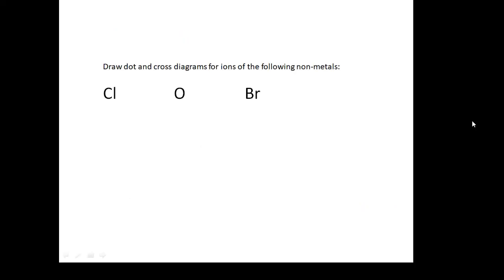Draw dot and cross diagrams for ions of the following non-metals. Figure out what group they're in, find out what their charge is, do a dot and cross diagram for them. Strictly speaking, the dot and cross diagrams when we do compounds will be a lot more important, but you should be able to do them for the atom and the ion on its own.